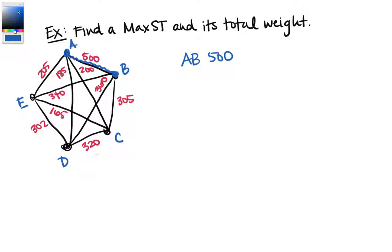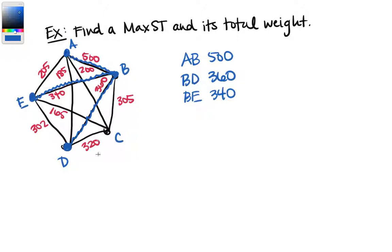Now what is the next most expensive edge? We have 205, 185, 340 — it looks like 360. Edge BD with weight 360. Next is 340, the edge from B to E — marking that doesn't create a circuit, so BE with weight 340. Now vertex C is the only vertex that hasn't been spanned yet. The most expensive remaining edge that hits C and doesn't create a circuit looks like 320.